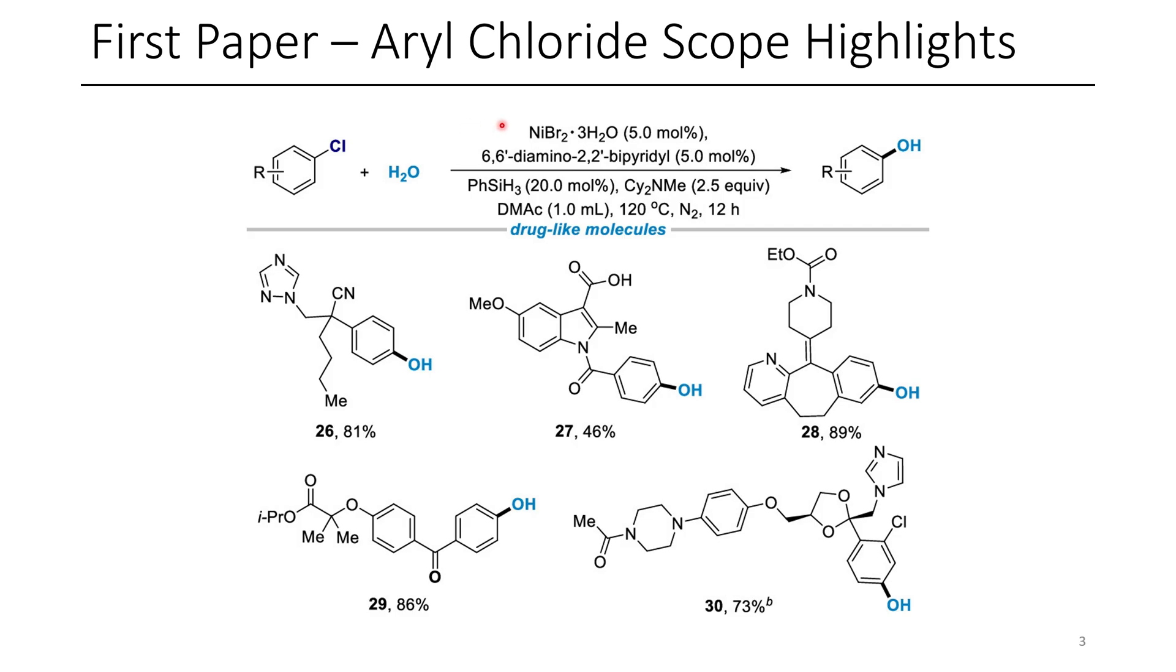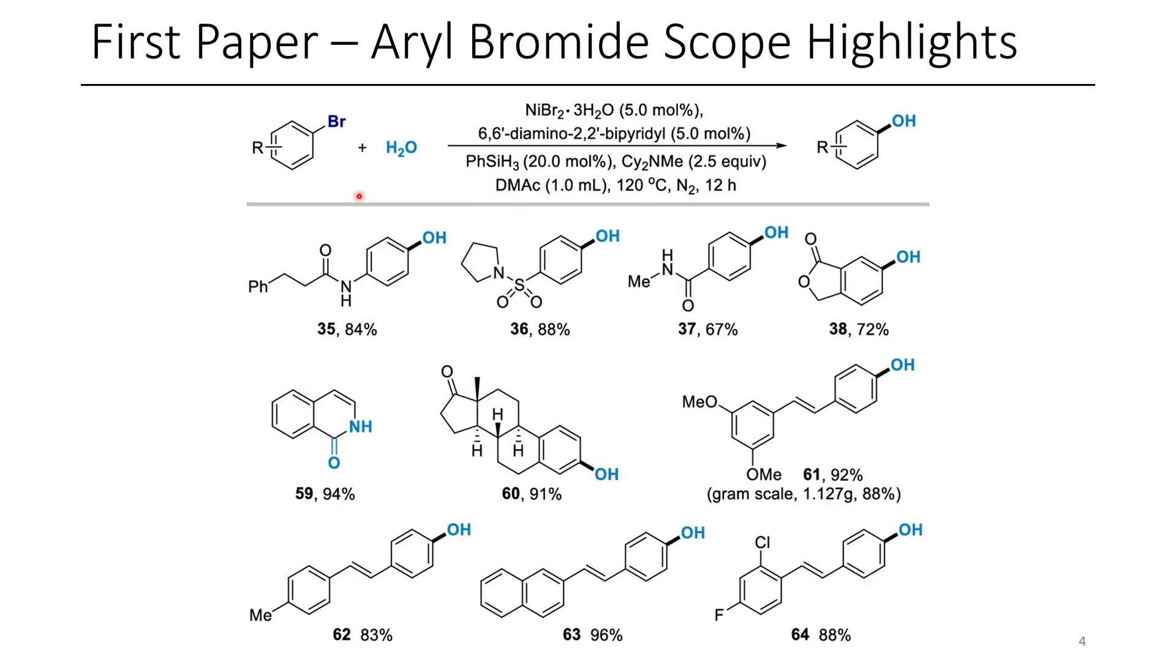The catalyst for this reaction is nickel(II) bromide, bound to this diaminobipyridine ligand, and phenylsilane was used to promote it. Now, in addition to aryl chlorides, which are commercially available and synthetically accessible, aryl bromides were also demonstrated.